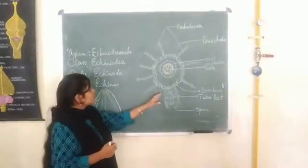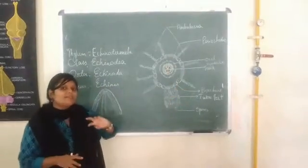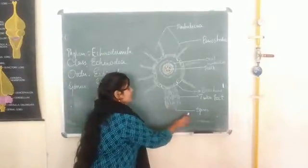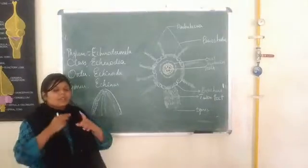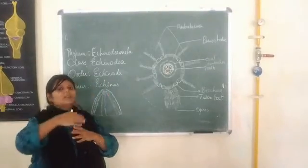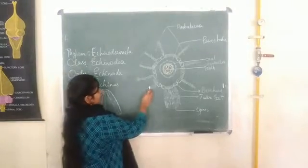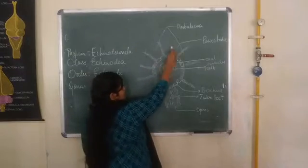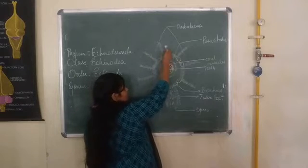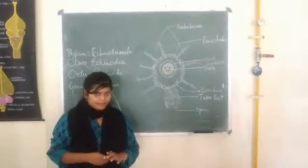The tube feet are arranged in rows — there are ten rows, meaning five pairs. Five pairs of tube feet. In between, you have the spines. There are two rows of spines, with double rows of spines running parallel. You will find spines, and you have the ambulacral zone — the space between the columns is the ambulacral area.